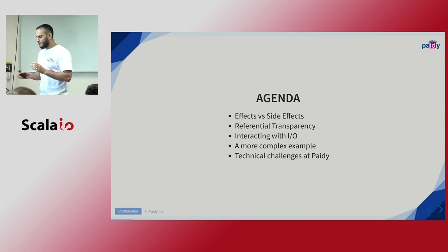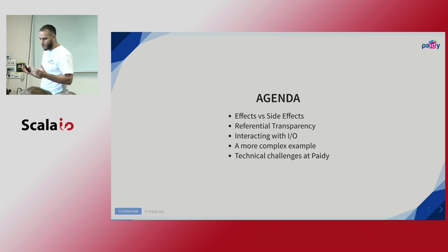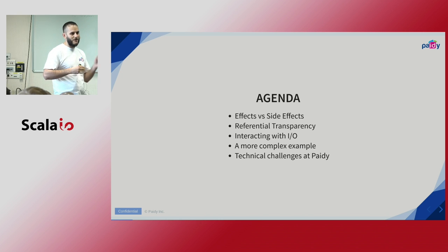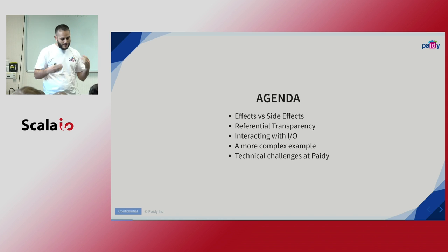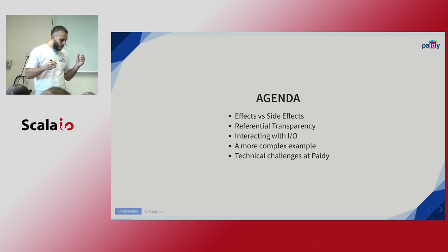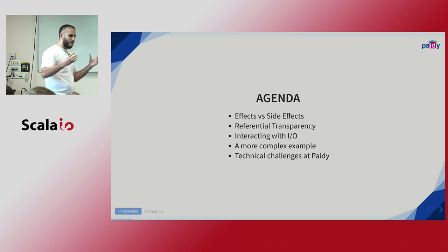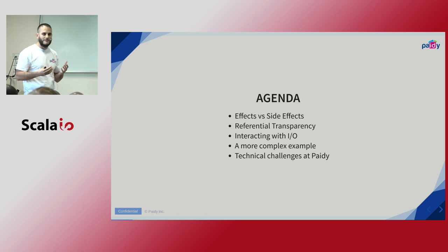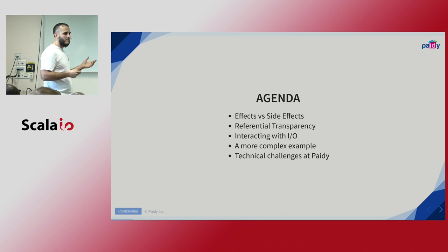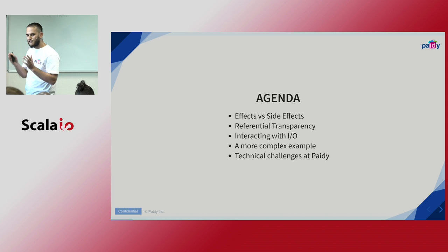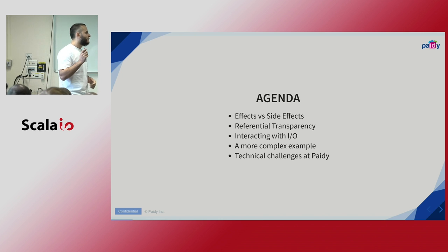The agenda for today will consist of three different parts. The first two are about the basics — what you need to know before talking about parallelism or concurrency, like the base of what functional programming is. The next two things will be focused on real examples, showing how we can compose different programs and refactor them. Finally, I'd like to talk about the technical challenges we faced at PayD and how Cats Effect helped us solve them.